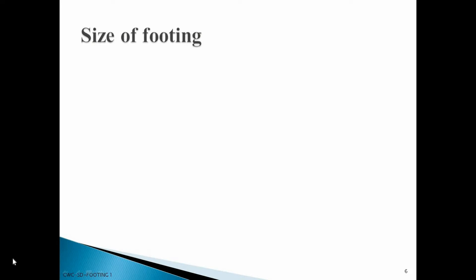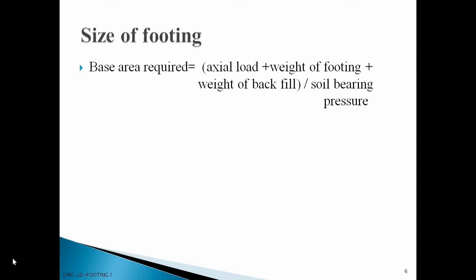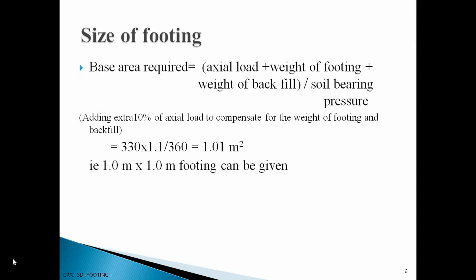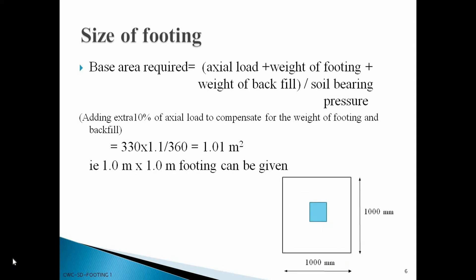To find the size of the footing, we divide the total load by the bearing pressure of the soil. The total load includes the axial load from the column, weight of the footing, and weight of the backfill. Since we don't have footing dimensions at this stage, we assume the weight of footing and backfill together as 10% of the axial load. So 330 kN plus 10% of 330 gives the total load. Dividing by the bearing pressure of 360 kN/m², we get the required footing area. Since the column is square in plan, we adopt a square footing, arriving at plan dimensions of 1 m by 1 m.